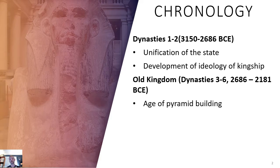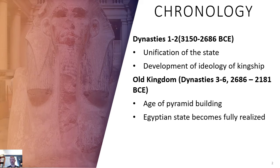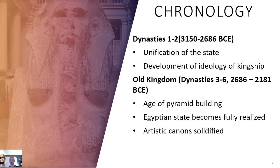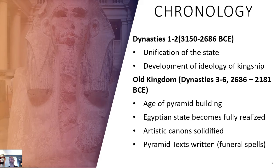We've moved from building in the desert — holes in the ground lined with mud bricks covered with a mound — to magnificent stone constructions that reach to the heavens. This is when the Egyptian state becomes fully realized, though no state is all-powerful. The Old Kingdom is also where artistic canons — the traditions, rules, images, and styles — solidify into what we associate with ancient Egypt, even though elements appeared earlier.